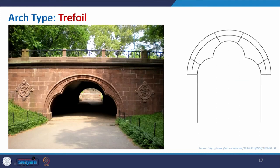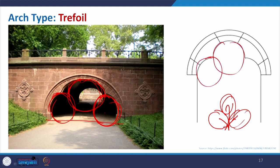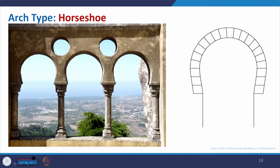Coming to the trefoil arch, which is similar to the foil of a tree leaf. It forms a structure where three circles are used with symmetry maintained. In this case you can see how they maintain this particular geometry to create it. This is also an ornamentation to the arch form that was historically used.